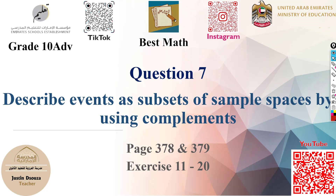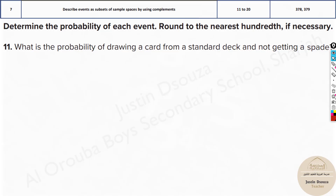In this video, we will learn how to find the probability of a complement. Here we have to determine the probability of certain conditions, but the probability is of not getting a certain thing. If you read this problem: what is the probability of drawing a card from a standard deck and not getting a spade? In such cases, find the normal probability of getting a spade and subtract it from one.